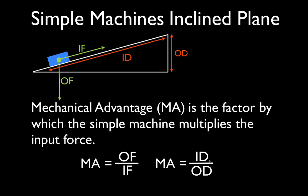And I always like to remember, it's always the larger one divided by the smaller one, because in most cases the mechanical advantage is always going to be greater than one. So there you go. That is a simple introduction.